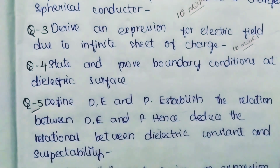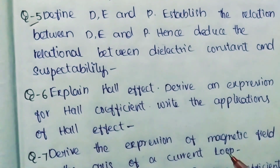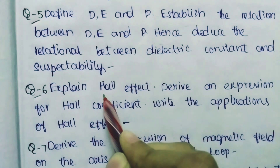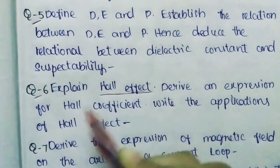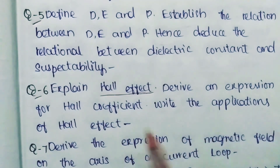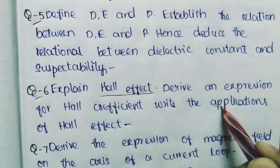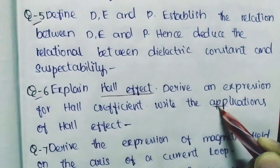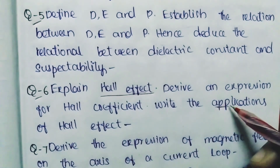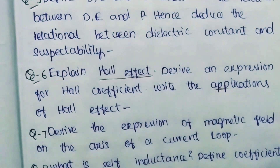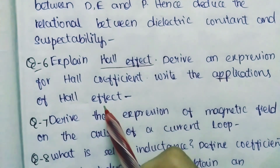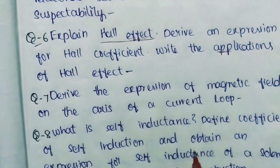Question Number 6: Explain Hall Effect. This can come as a short question too. Explain Hall Effect, derive an expression for Hall coefficient, and write the applications of Hall Effect. Applications are easy to write - Hall Effect is used in various situations. That's what applications means. Applications are there for Hall Effect and other effects too. Don't go off track from the syllabus.